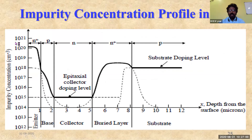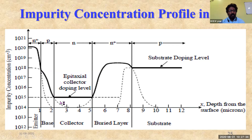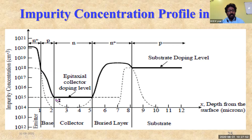In the impurity concentration profile, measured in atoms per centimeter cube: for the emitter region, the N+ impurity concentration can be up to 10²⁰ per cm³. For the base, the impurity level ranges from 10¹⁸ to 10¹⁵ depending on the operation. For the collector, the doping level is constant at 10¹⁵ per cm³.